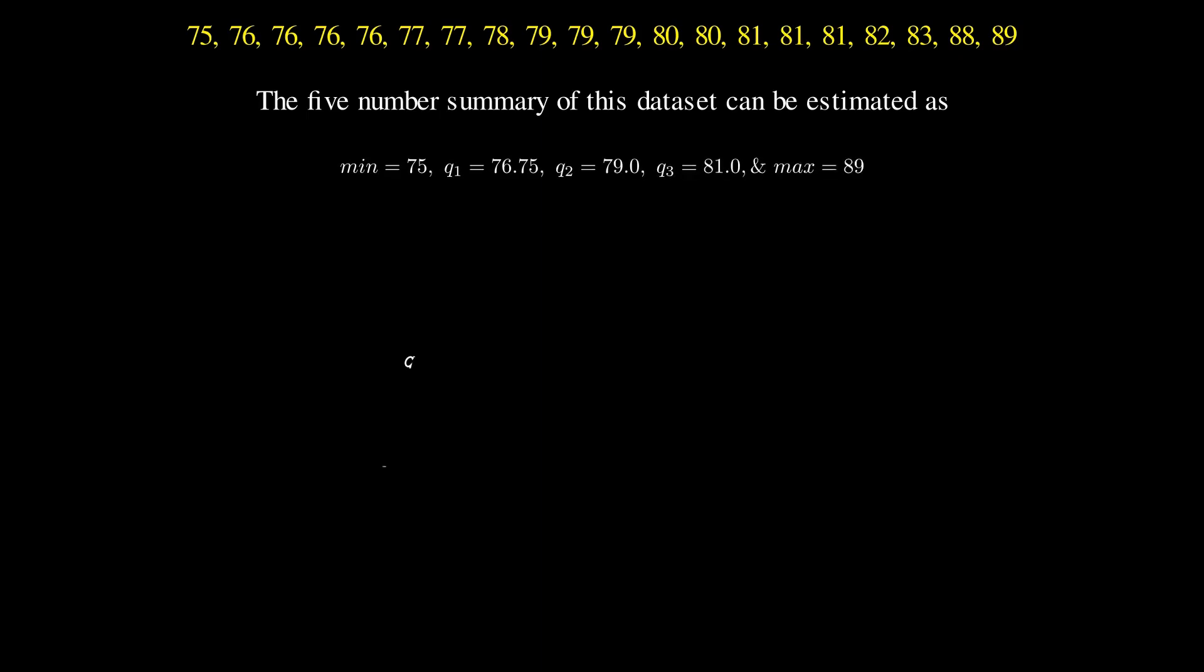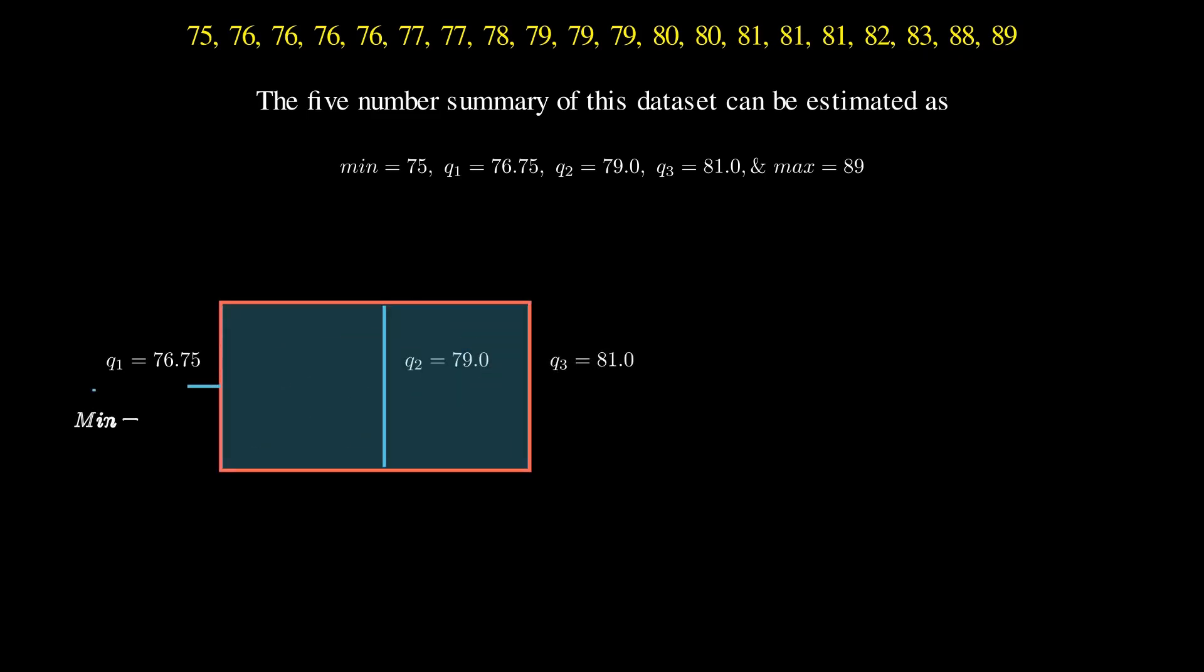The five-number summary can also be presented as the box whisker plot. We first draw the Q2 vertical line and then Q1 and Q3. The whiskers are associated with the two edges of the box.